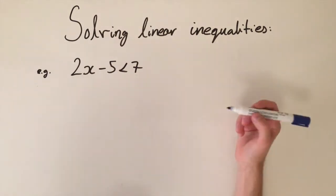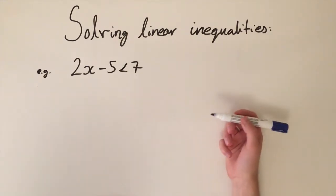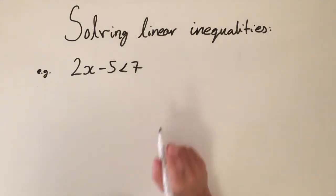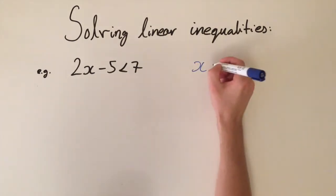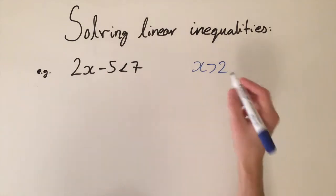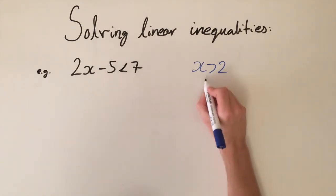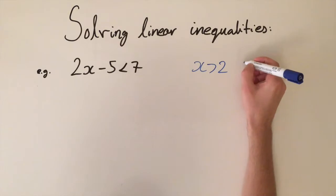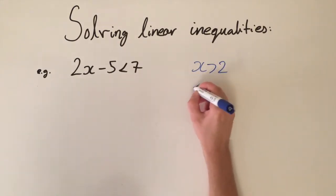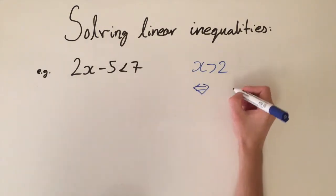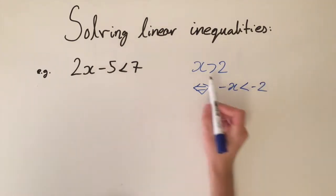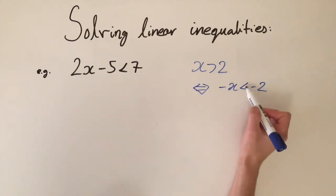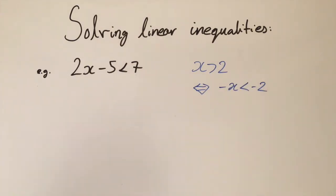In solving linear inequalities we use all the techniques for solving linear equalities, except there's one very important difference: when you multiply or divide by minus 1 or any negative number, we flip the sign of the inequality. So for example, x is greater than 2 is equivalent to minus x is less than minus 2 — we've multiplied by minus 1 and had to flip the inequality.